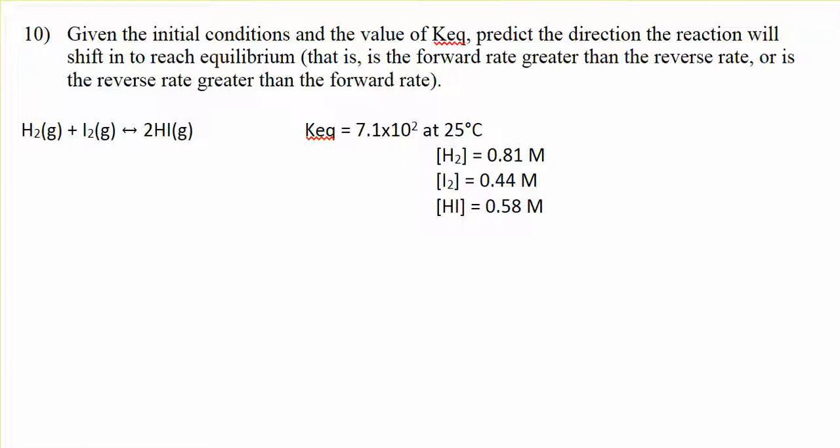So in our first reaction, I want to write a Keq expression, which for this equation would be products divided by reactants. But we're not at equilibrium yet. We're at some condition other than equilibrium. So really, Q would be a more accurate way to set that equation.